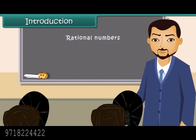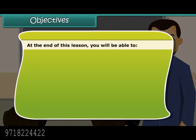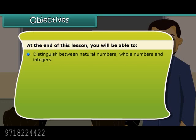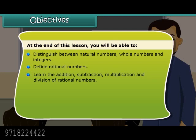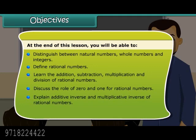Lesson objectives: at the end of this lesson you'll be able to distinguish between natural numbers, whole numbers, and integers; define rational numbers; learn the addition, subtraction, multiplication, and division of rational numbers; discuss the role of 0 and 1 for rational numbers; and explain additive inverse and multiplicative inverse of rational numbers.